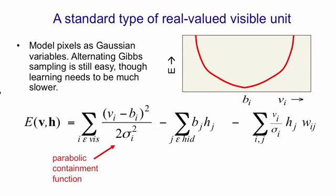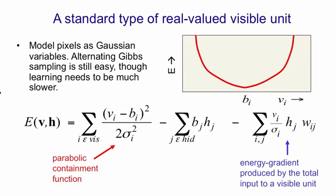The interactive term between the visible and the hidden units looks like this. And if you differentiate that with respect to vi, you can see that you get a constant. It's the sum over all j of hj wij divided by sigma i. So that term with its constant gradient looks like this.